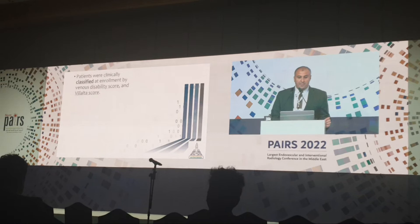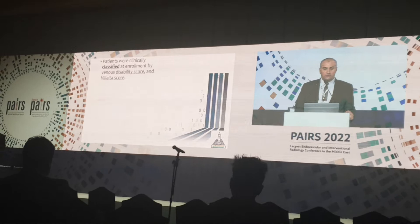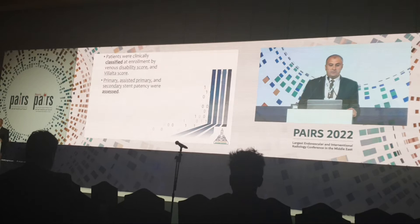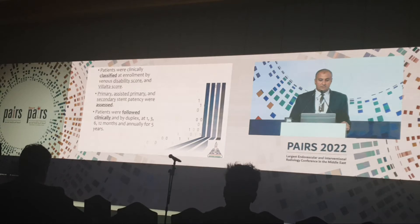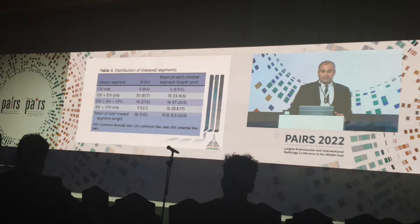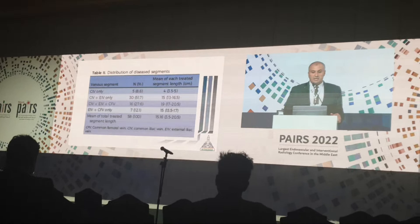Patients were clinically classified at enrollment by Venous Disability Score and Villalta Score. Primary, assisted primary, and secondary stent patency were assessed. Patients were followed clinically by duplex at 1, 3, 6, and 12 months, and annually for 5 years. This shows the distribution of the diseased segments, including the length and anatomical distribution of each segment.